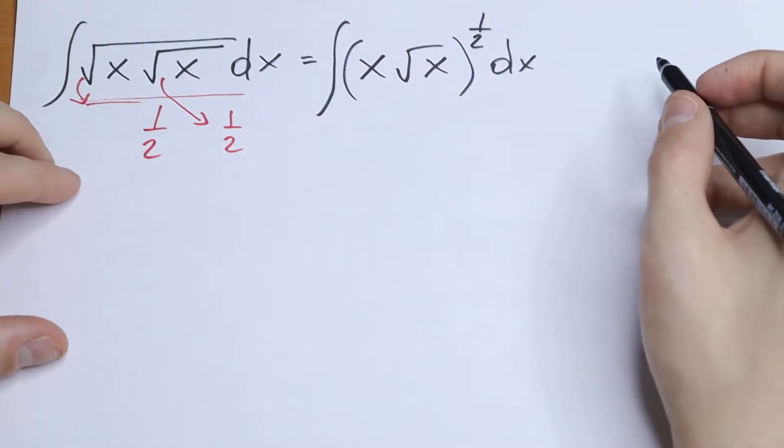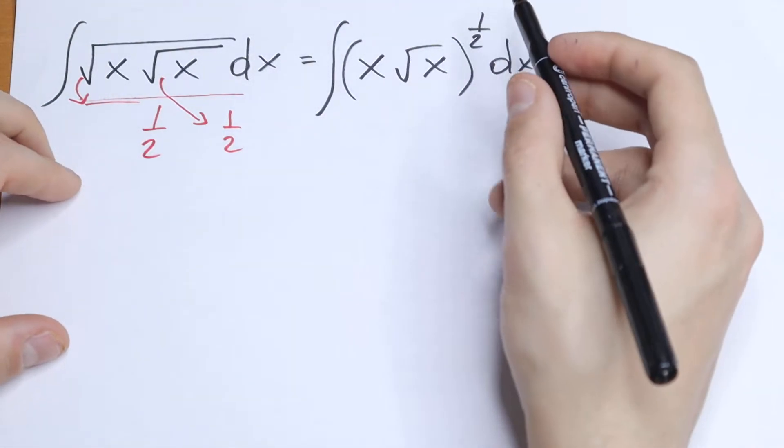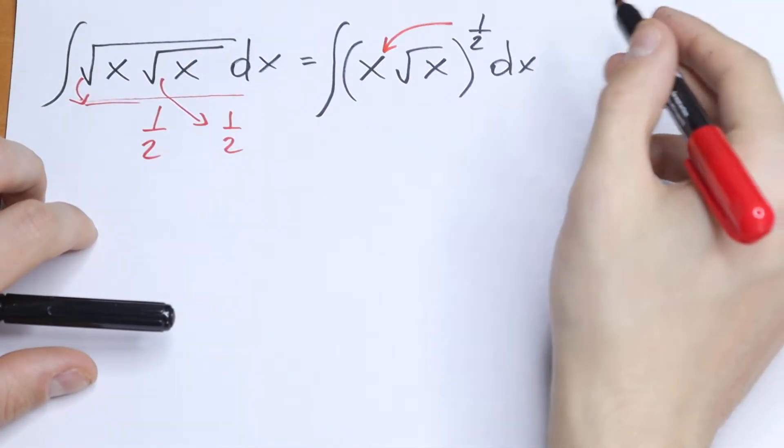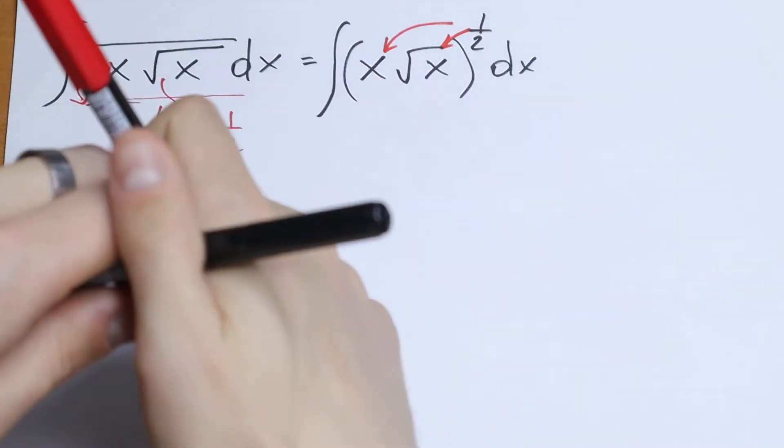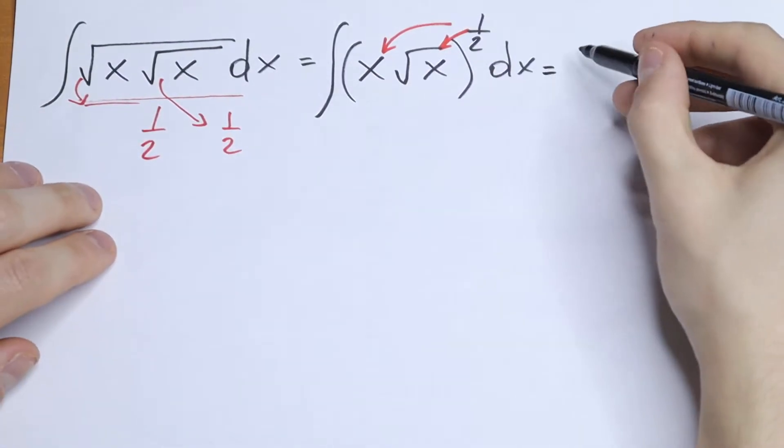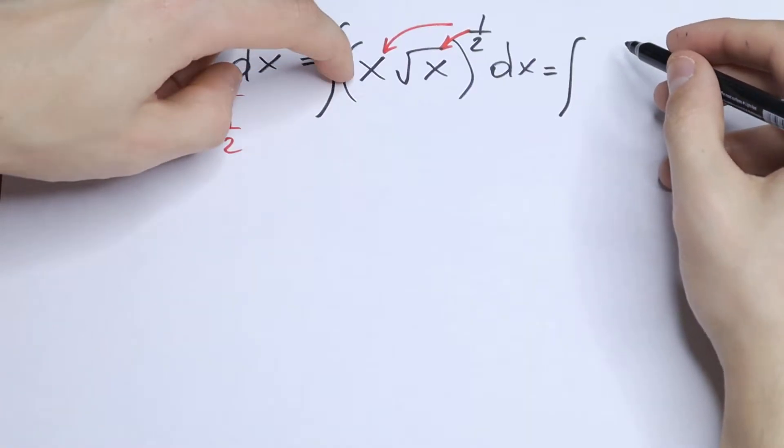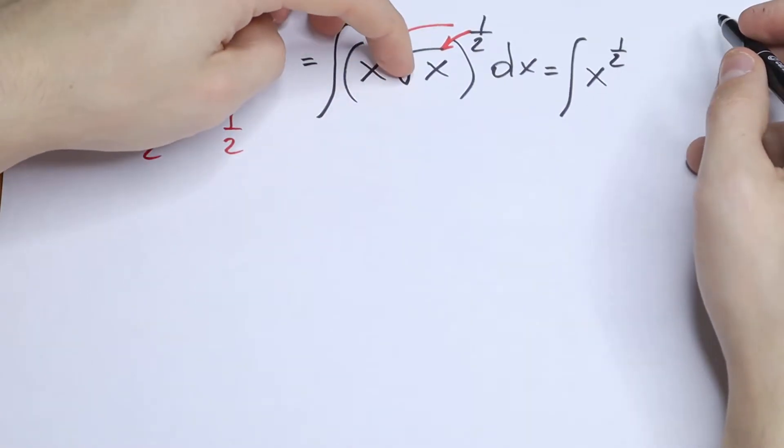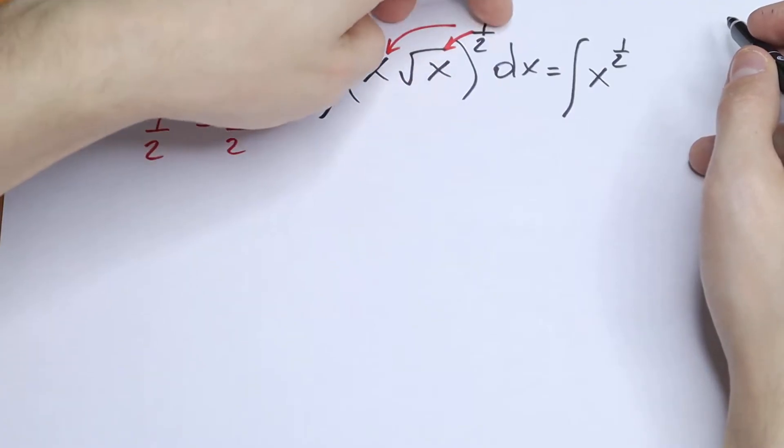So what are we going to do next? We all know that if we raise a product to a power, we need to raise every term, both x and square root of x, to this power. So as a result we will have that this will be equal to integral of x to the power 1 half, and right here we have x to the power 1 half raised to the power 1 half.